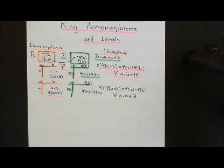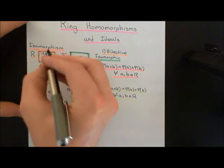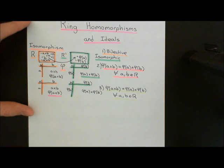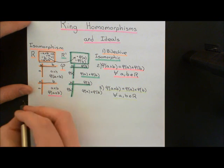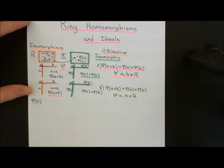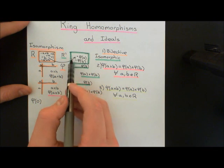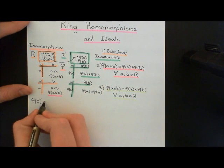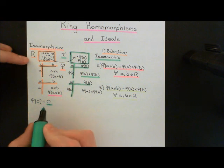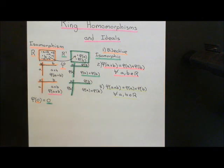Before we move on to the concept of a ring homomorphism, I want to stress something important. I want to look at where two very particular elements of the ring get sent — the additive identity 0 and the multiplicative identity 1. I claim that the additive identity always gets sent to the additive identity in the codomain ring: phi of 0 equals 0, where this 0 on the left is in the domain ring and this 0 on the right is in the codomain ring.